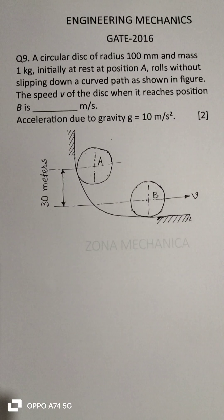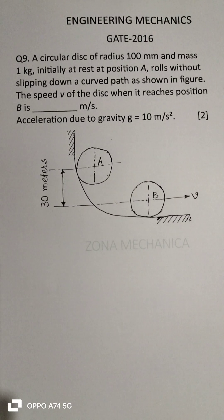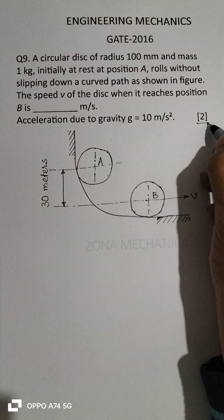Hi, welcome to Zona Mechanica. There is a numerical answer type question on circular motion of a disk. The figure at the margin indicates the weightage of the question, i.e., 2 marks.